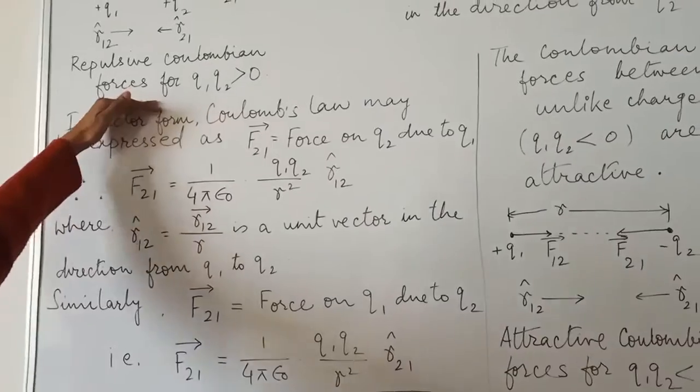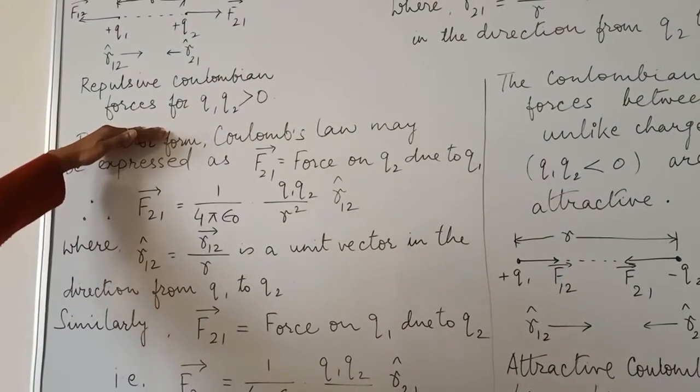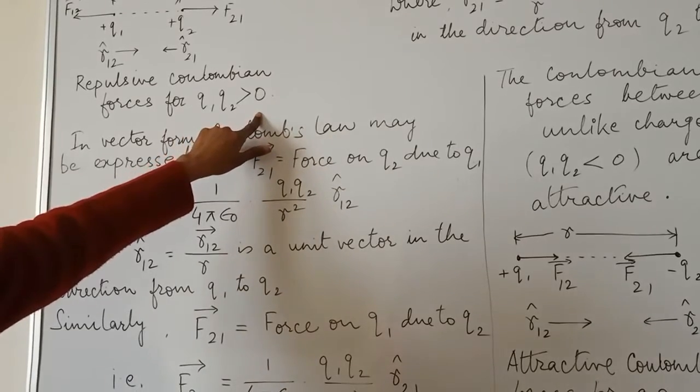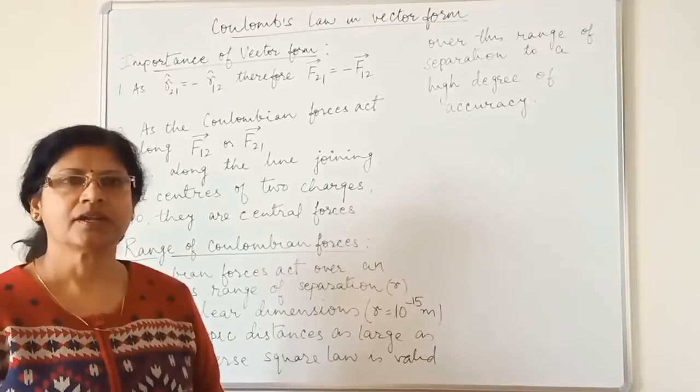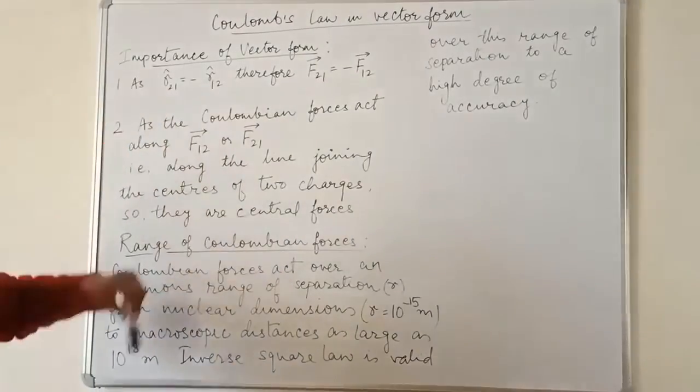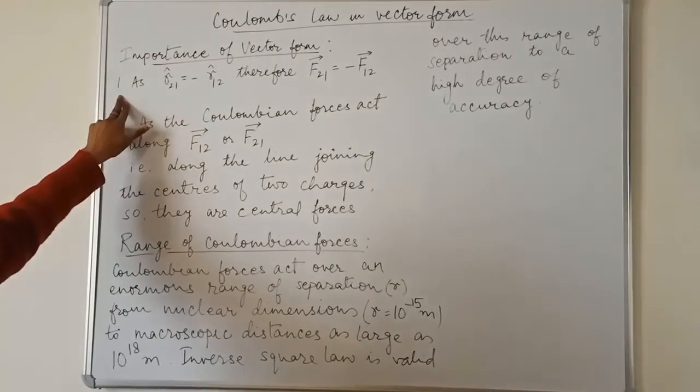Here you see repulsive Coulombian forces for Q1, Q2 more than zero. Now come to importance of vector form.